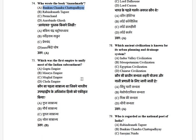Who was the first empire to unify most of the Indian subcontinent? The options are: Gupta Empire, Maurya Empire, Mughal Empire, and Chola Empire. The answer is the Maurya Empire.